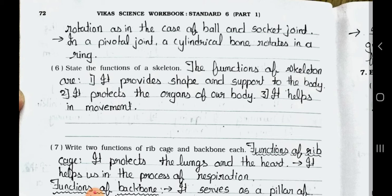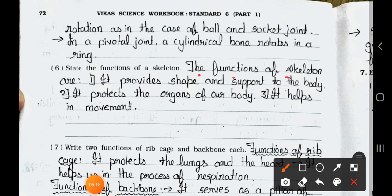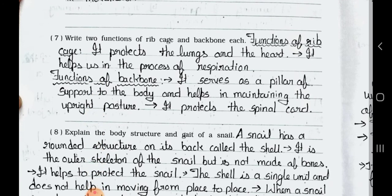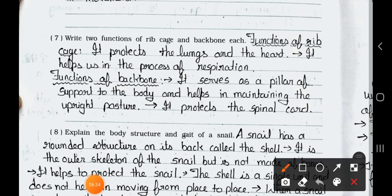Question 6: State the functions of a skeleton. The functions of a skeleton are: 1. It provides shape and support to the body. 2. It protects the organs of the body and helps in movement. Question 7: Write two functions of the ribcage and backbone each. Functions of the ribcage: It protects the lungs and the heart, and it helps us in the process of respiration. Functions of the backbone: It serves as a support to the body, helps in maintaining an upright posture, and protects the spinal cord.